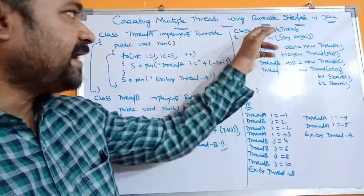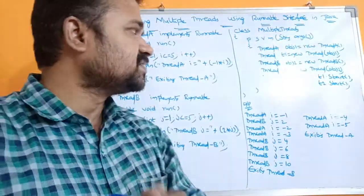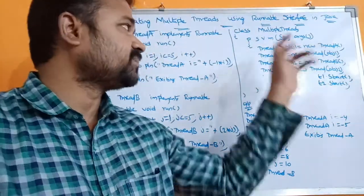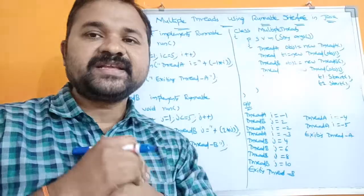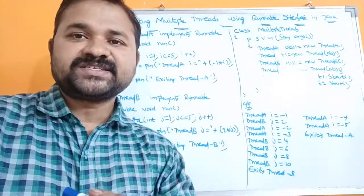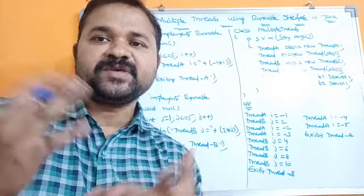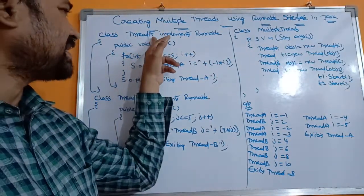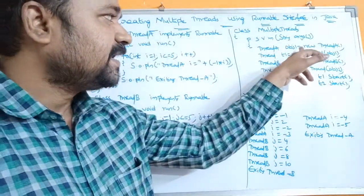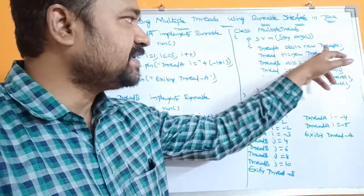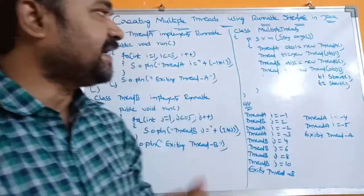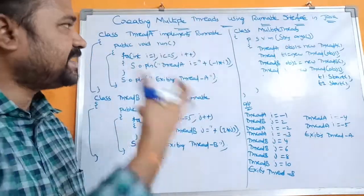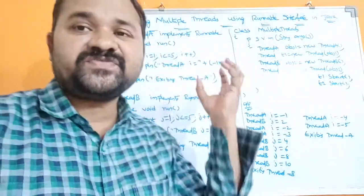Execution will start from the main method. The main class name is MultipleThreads, so the name of the program is MultipleThreads.java. Public static void main(String[] args) — execution of the program starts from the main method. First we have to create an object for the corresponding class: ThreadA obj1 = new ThreadA().